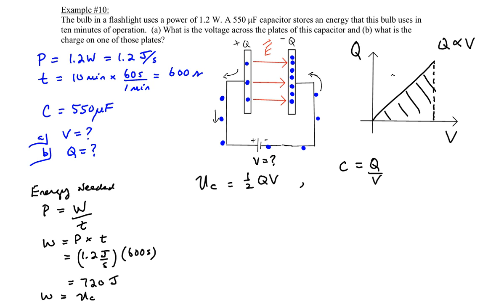Let's rewrite this equation as q equals c times v and substitute that into this equation. So we have one half times cv times v. So the stored potential energy is equal to one half cv squared.